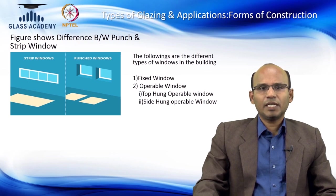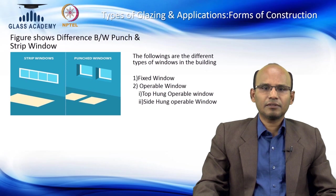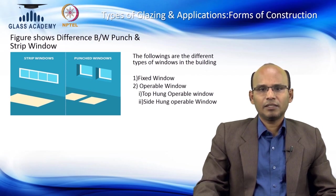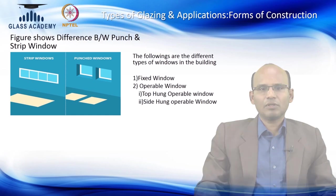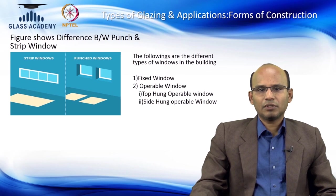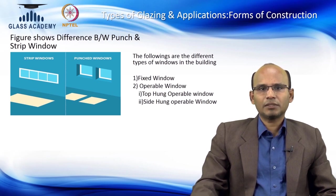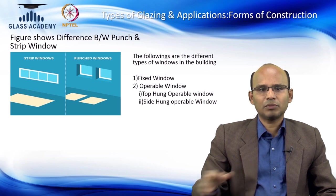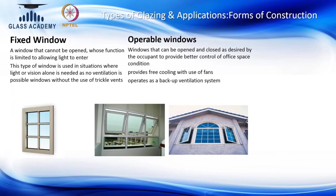For ventilation, windows need to be able to open to allow fresh air. We call these operable windows. They can be opened from the top or from the side. A window hanging open from the top is commonly used in residential buildings, and windows can also open from the sideways.